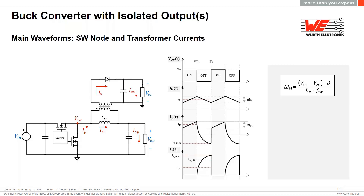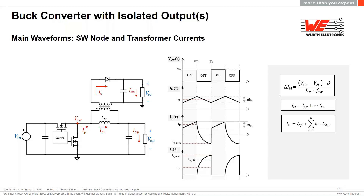The formula used to calculate the magnetizing ripple current is the same as in a standard buck converter, but now we are talking about the magnetizing inductance of the transformer. The average value of the magnetizing current equals the primary output current plus the isolated output current scaled by the turns ratio — for a single isolated output solution. When there are multiple isolated outputs, the output current of each rail scaled by the corresponding turns ratio must also be taken into account, and they all add up to form the average magnetizing current.